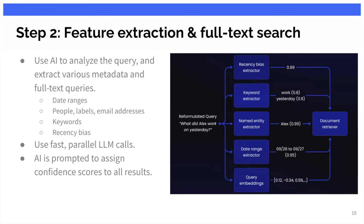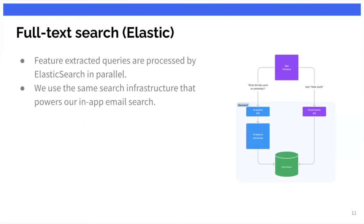Next we take the rewritten query and run it through a series of LLM prompts to extract various features. We specifically look for any date ranges, names of people, email labels explicitly referenced, email addresses, other keywords, and recency bias indicators. Given a question like "What did Alex work on yesterday?" the LLM could identify the keywords "worked" and "yesterday," a named entity extractor identifies "Alex," a date range extractor determines the date relative to current time, and we also run it through an embedding model to extract query embeddings. For every feature we extract we also assign confidence scores, which help the LLM reason about its answer and are used later to re-rank results.